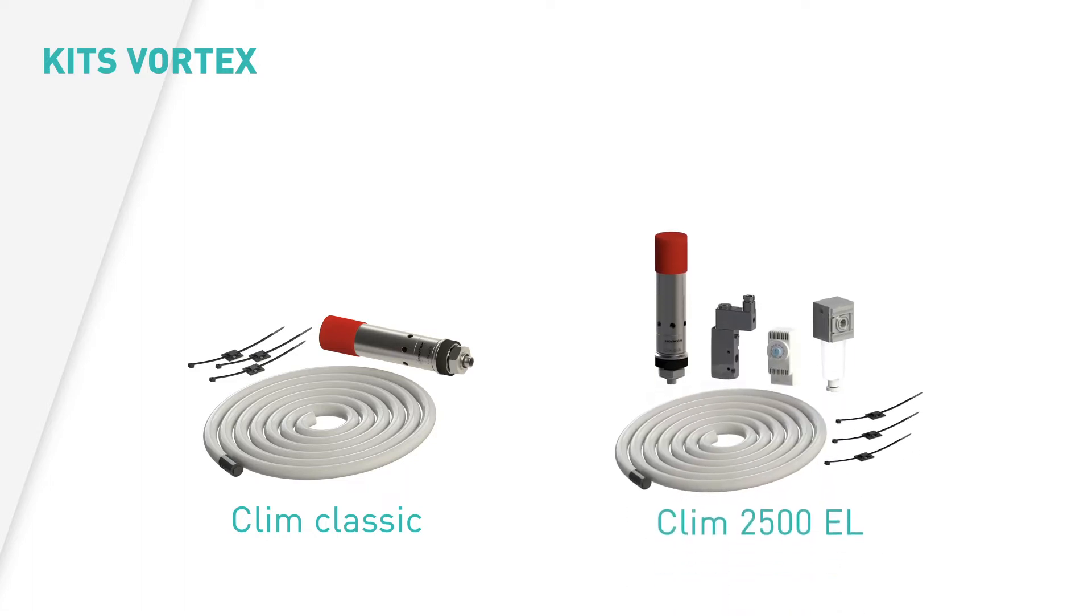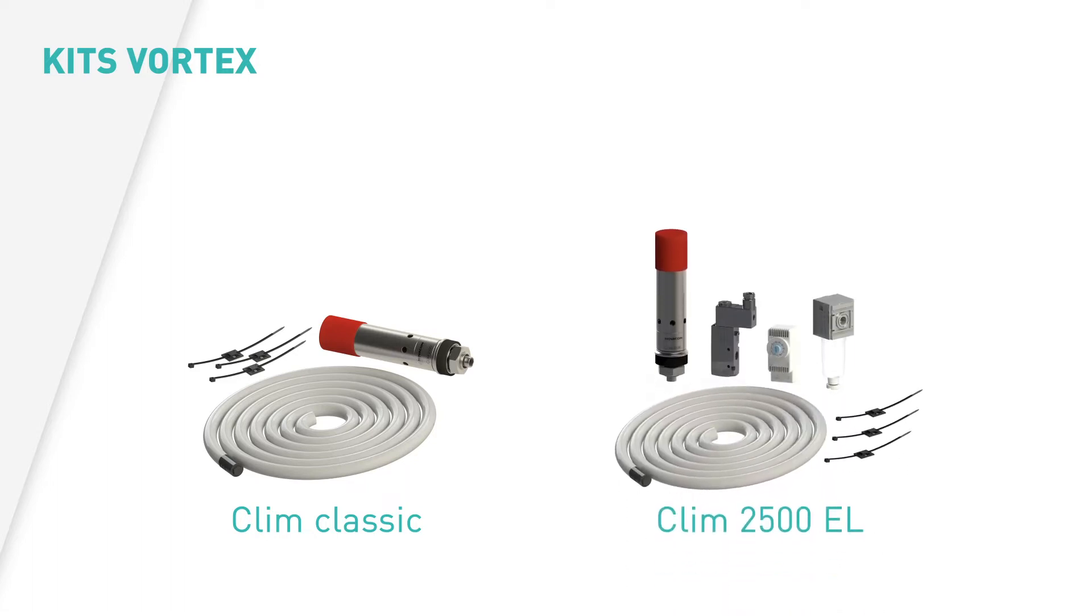The second kit, the EN kit, contains an adjustable thermostat up to 80 degrees, a 24 or 220 volt solenoid valve, a compressed air filter to block humidity and a digital thermometer as an option.